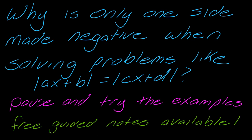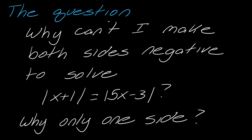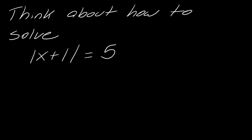A pretty good question came up about solving absolute value equations. The question was: why can't I make both sides negative when solving? Why is it that when setting up the solving strategy, I only make one side negative? The best way to approach this is to first think about how to solve plain old absolute value equations, so we'll quickly go through this.